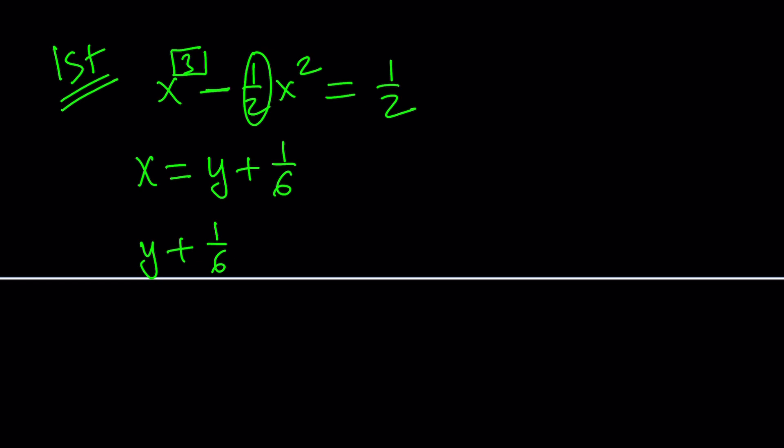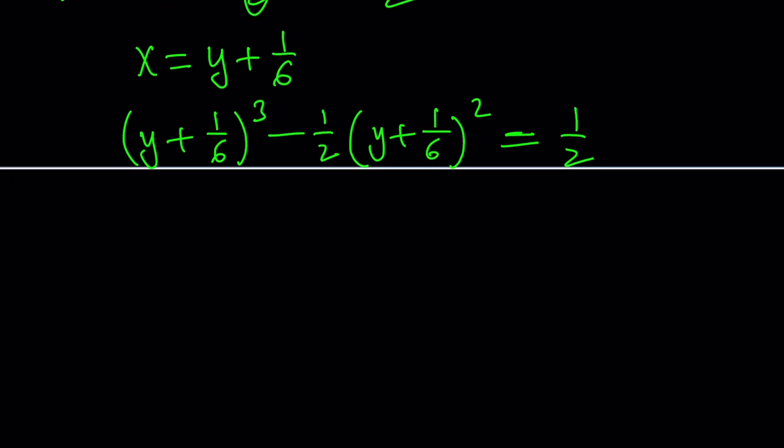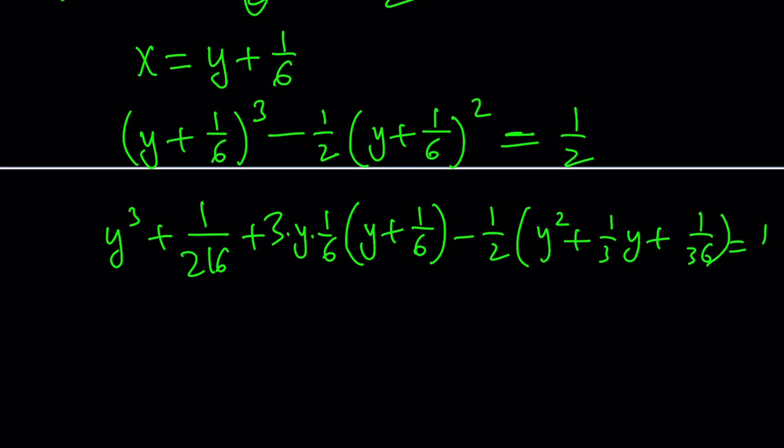You get y plus 1 over 6 to the third power minus 1 half of y plus 1 over 6 to the second power equals 1 half. Of course, nothing happens on the right hand side because that's a constant. And now to cube this, I use a different identity, y cubed plus 1 over 6 cubed, which is 1 over 216, plus 3y times 1 over 6, multiplied by y plus 1 over 6. And this will give me y squared plus 1 over 3y plus 1 over 36. And then at the end, we'll get 1 half.